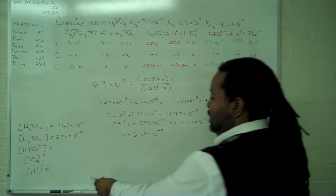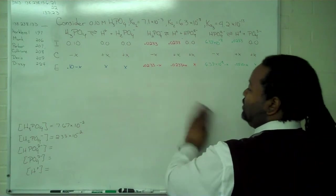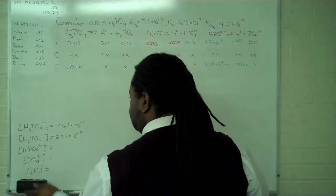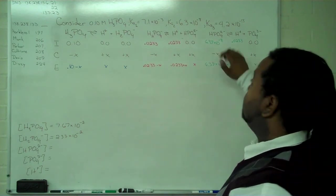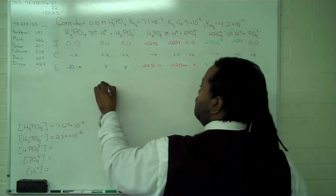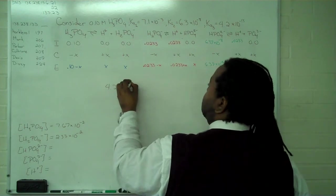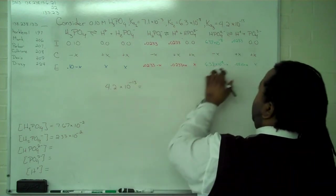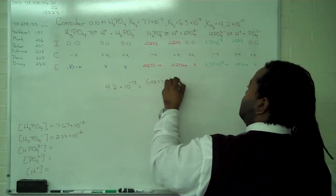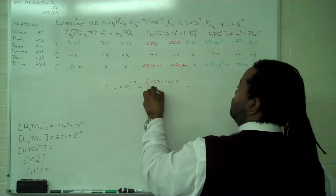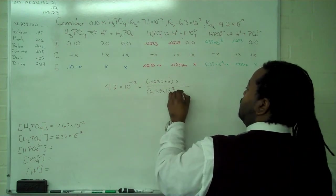So now that we have all of that information copied over, I'll again erase all of this here so that we have board space. So we're going to write in everything for our equilibrium constant using the third value because this is the third dissociation.